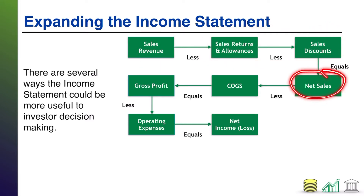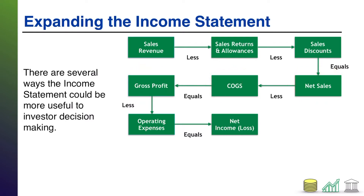We can also say, well, here were the net sales we made, and here's the cost of all those goods we sold. And therefore, here's the gross profit just from those goods. Again, more informative. From there, we can take out operating expenses and come up with net income. So that's one way we could make our income statement richer, taking into account something like a merchandising company, which could provide a more granular level of detail to investors.